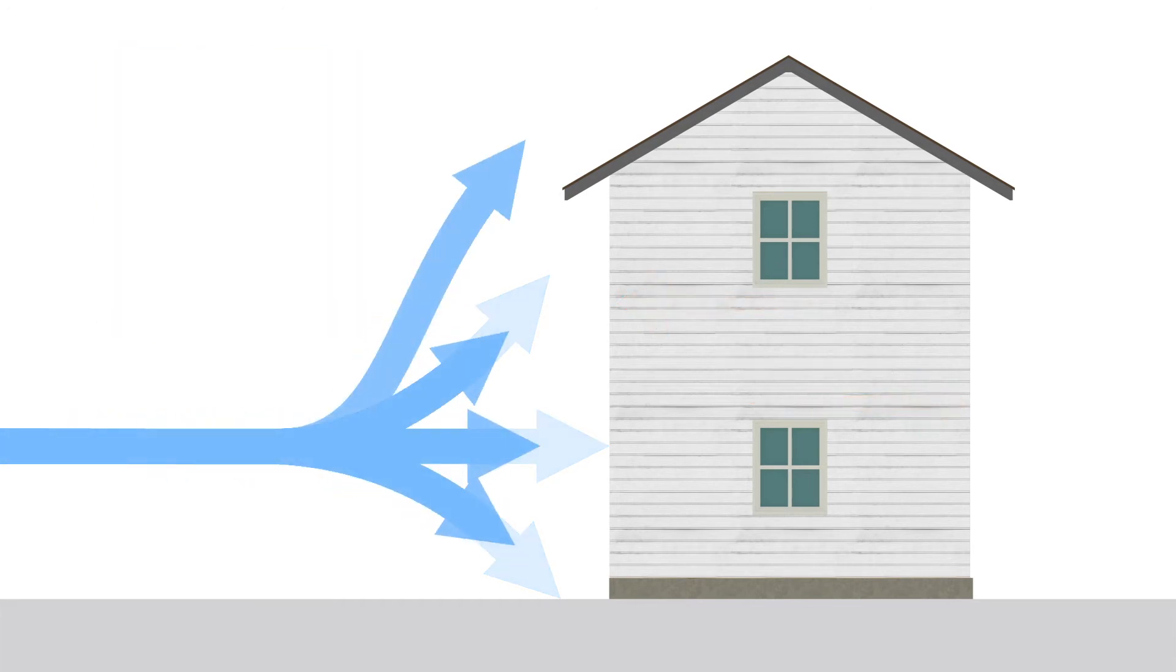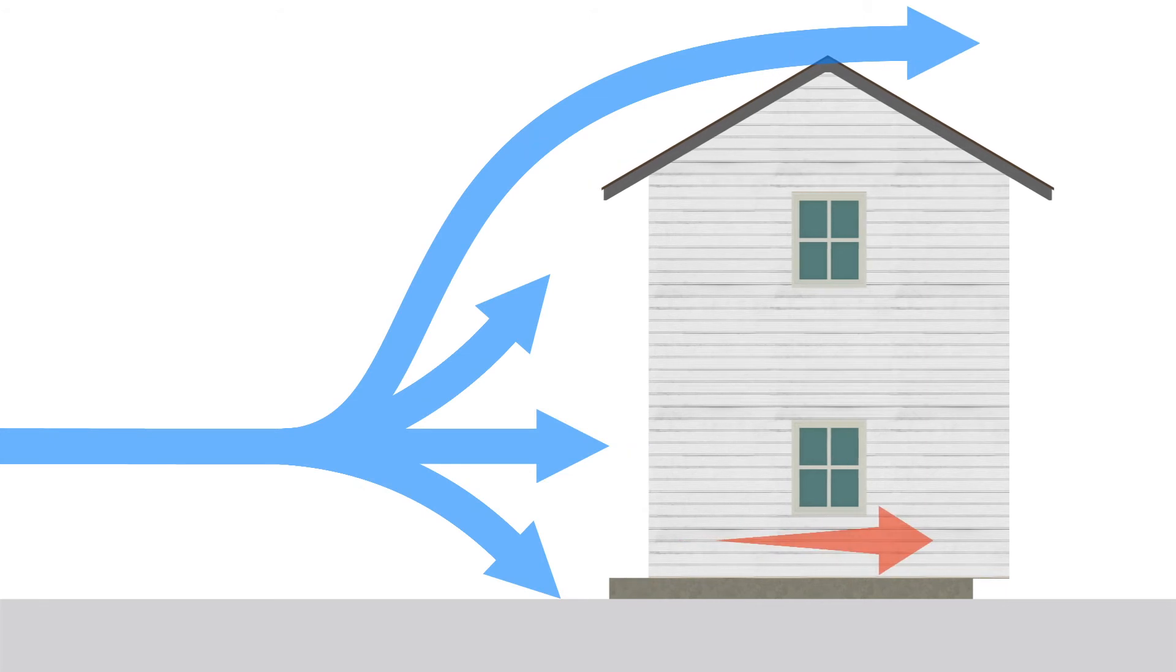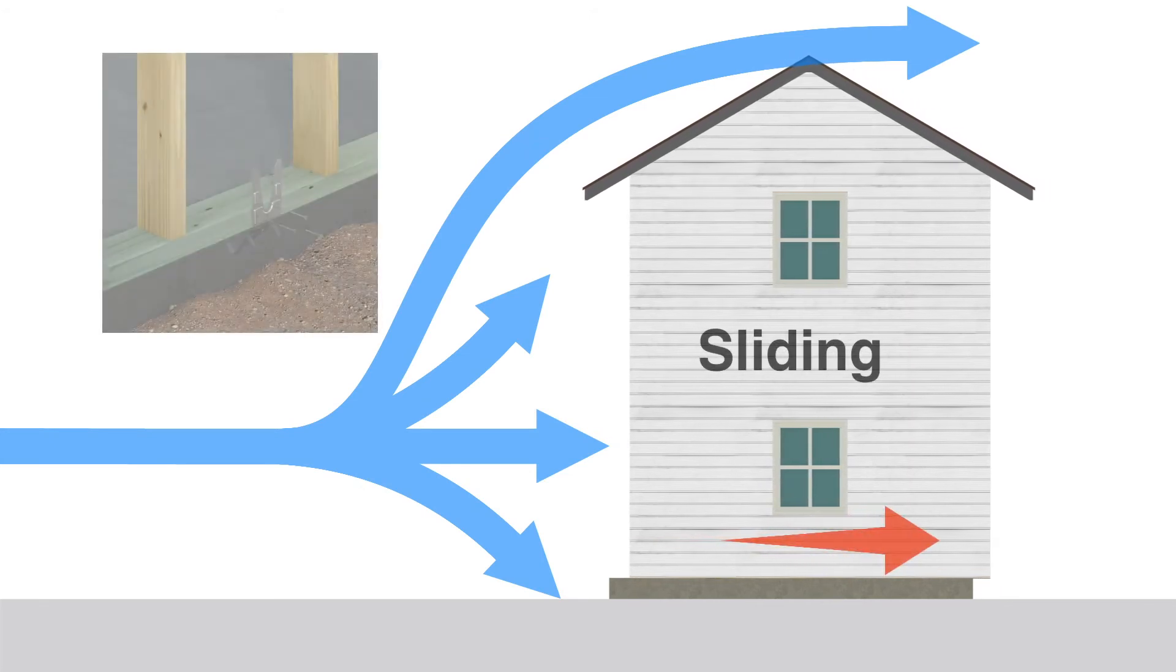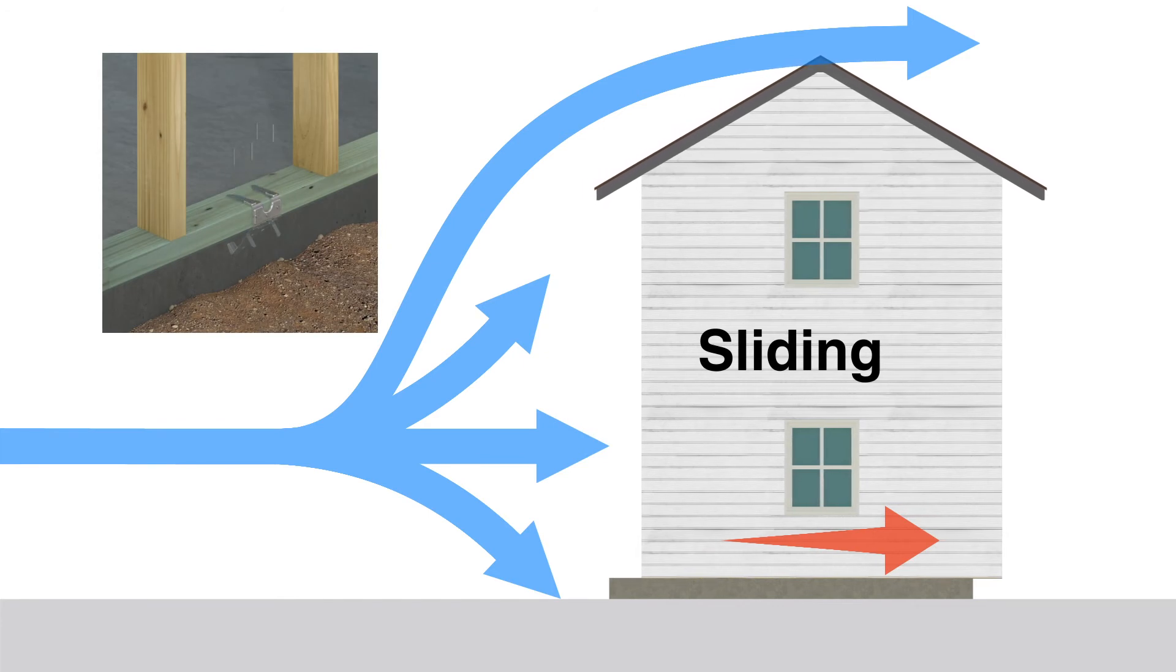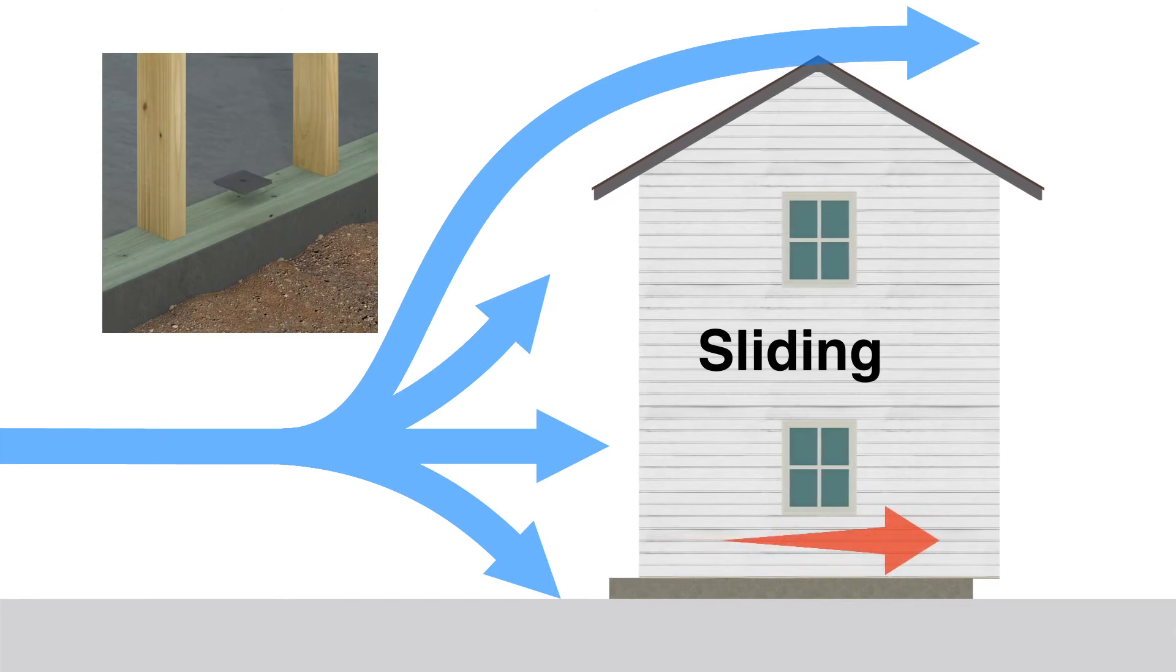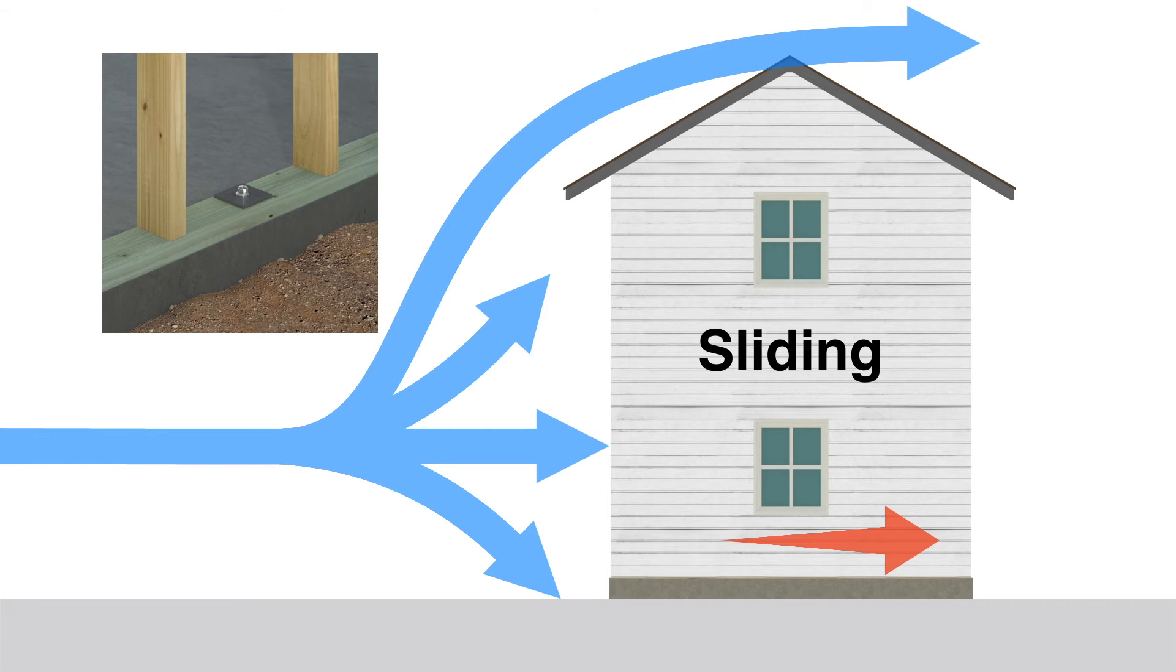Horizontal pressure can also force the house to shift off its foundation. This is called sliding. Sliding is resisted by attaching the walls to the foundation with mud sill anchors or anchor bolts.